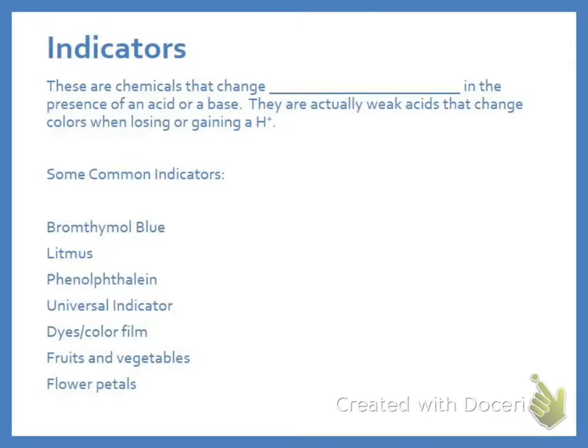Indicators are chemicals that change color, either in the presence of an acid or a base. They're actually weak acids that change because they're either gaining or losing that hydrogen when they're a weak acid. These are some common ones. Bromothymol blue is what we're going to use in our titration. It's blue in the presence of an acid, and then it turns yellow in the presence of the base.